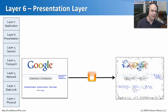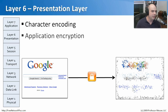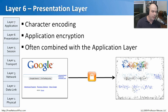At Layer 6, the presentation layer, information is prepared before it reaches human eyes. This layer handles character encoding — English in the US, Chinese or Japanese encoding where applicable. It also handles application encryption, so if you're connecting to Google over an encrypted HTTPS link, it's the presentation layer doing the encryption and decryption. It's often thought of as combined with layer seven, but handles encoding, encryption, and data formatting distinctly.